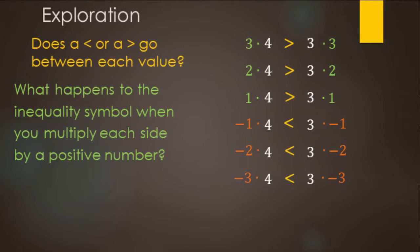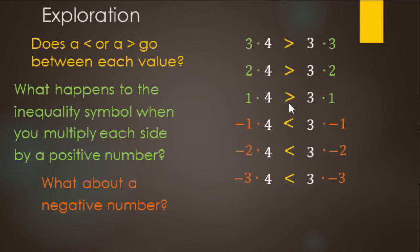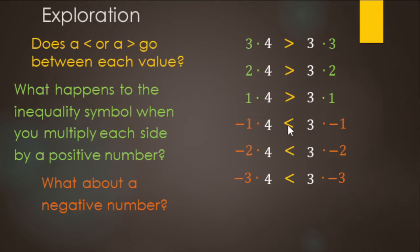When we multiply by positive numbers, nothing changes as far as which one is bigger. However, when we multiply by a negative number, which side is bigger switches — the smaller side is less negative than the bigger side, so the smaller side is now going to be greater when we multiply or divide by a negative number.